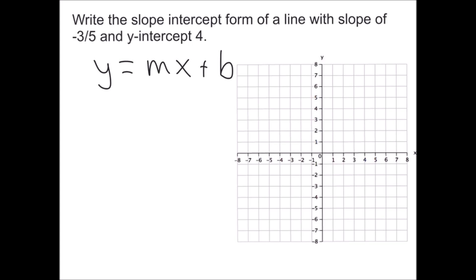Here they want us to write the slope-intercept form of a line with a slope of 3/5 and a y-intercept of 4. This is really easy because slope-intercept form requires a slope and a y-intercept, and they just gave us both. So we just plug them into the right spots: y equals 3/5 x plus 4. Just given those two pieces of information, we automatically have the equation of the line.